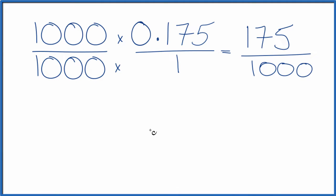We could say 175 divided by 25, that's seven. And a thousand divided by 25, that's 40.